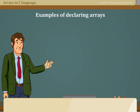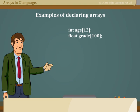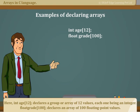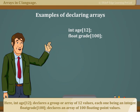Examples of declaring arrays. Int H12. Here, int H12 declares a group or array of 12 values, each one being an integer. Float grade 100 declares an array of 100 floating-point values.